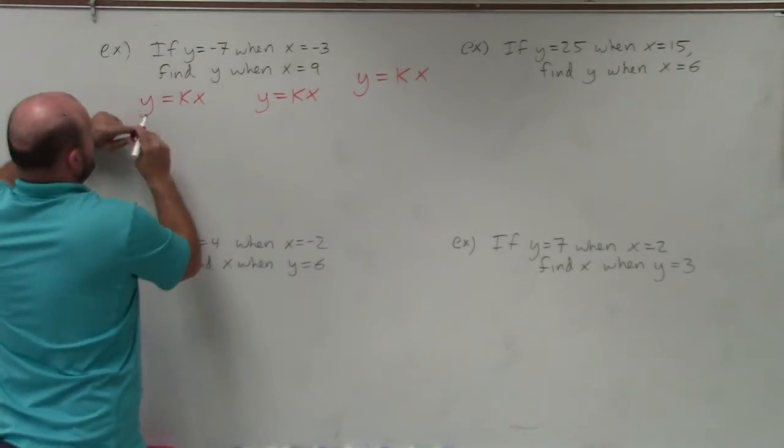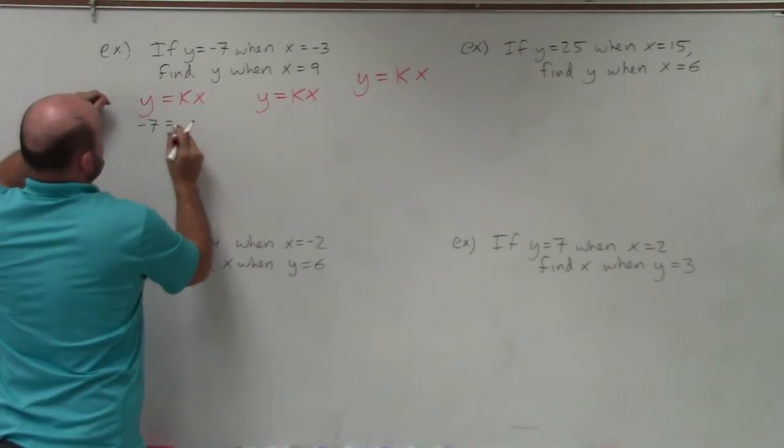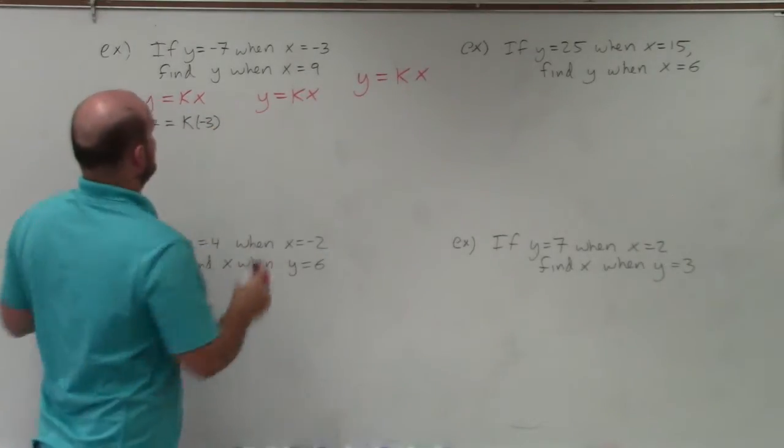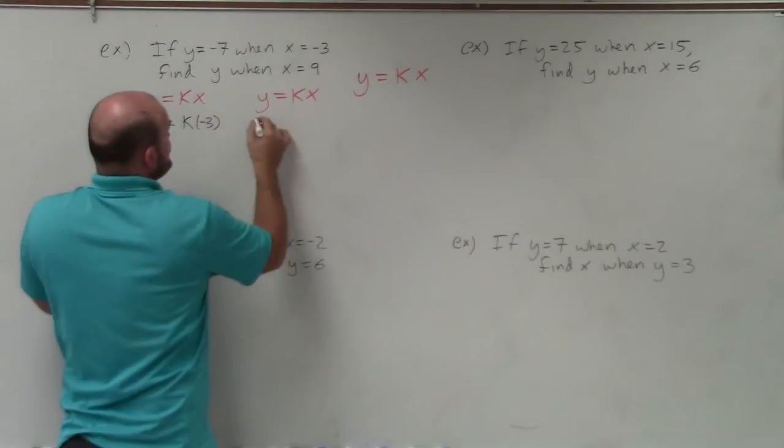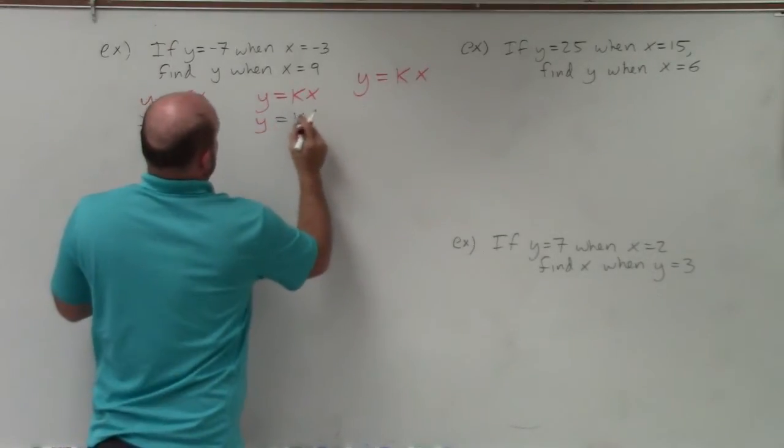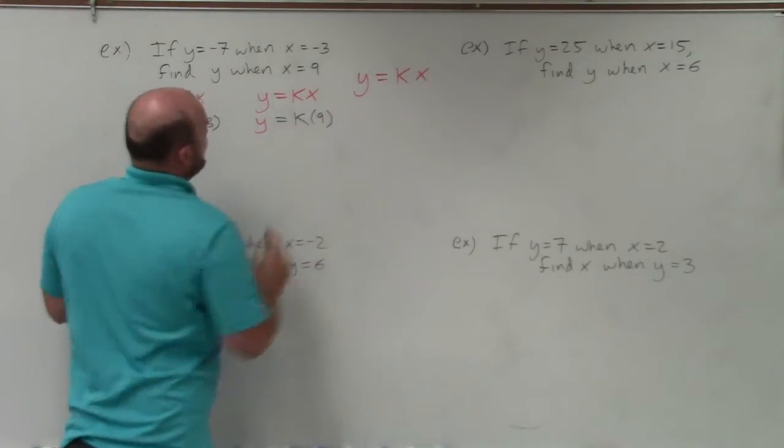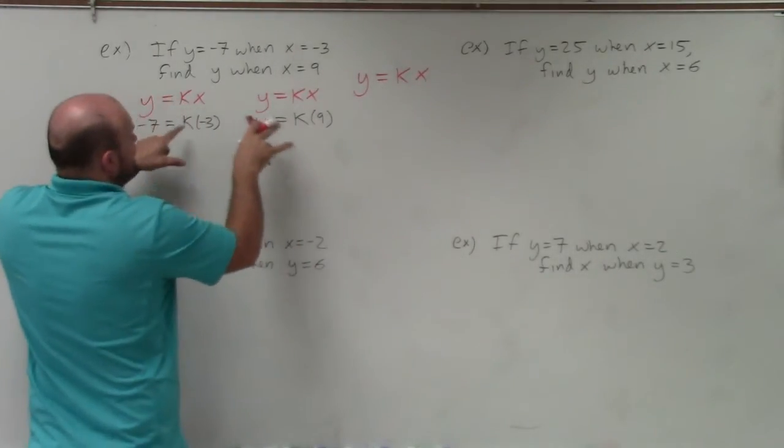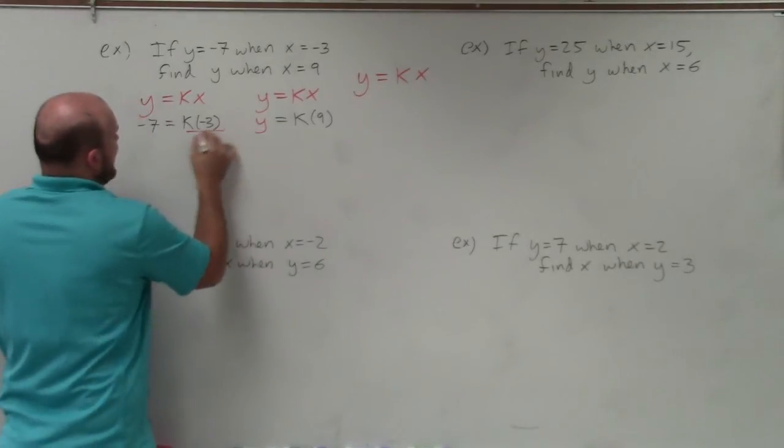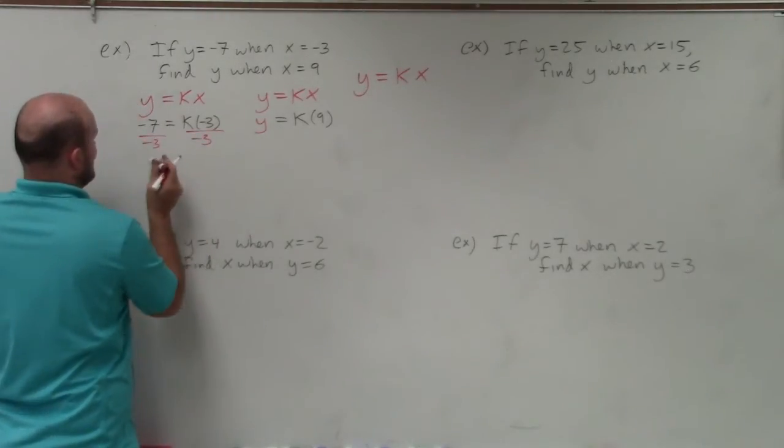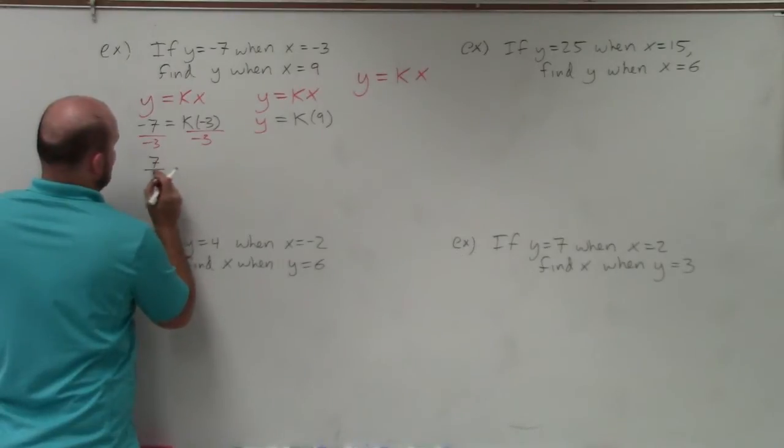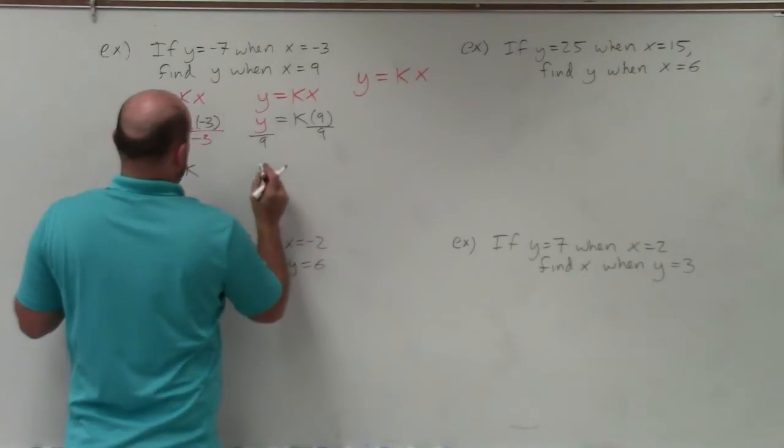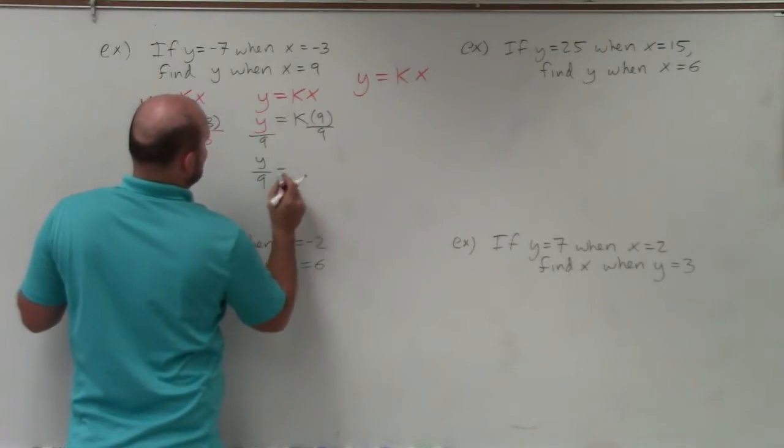They give us negative 7 equals k times negative 3. And over here, we don't know what y is, but they tell us y equals k times 9. Remember though, they both vary directly with x, so their constants are going to be exactly the same. If I divide to solve for the constant, I have 7 thirds equals k. And over here, if I divide by 9, I have y over 9 equals k.